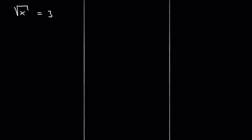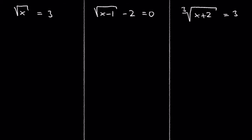Today I'll show you how to solve radical equations. A radical equation is an equation where you have an x under the root. For example, the square root of x equals 3, or the square root of x minus 1 minus 2 equals 0, or the third root of x plus 2 equals 3 are radical equations.